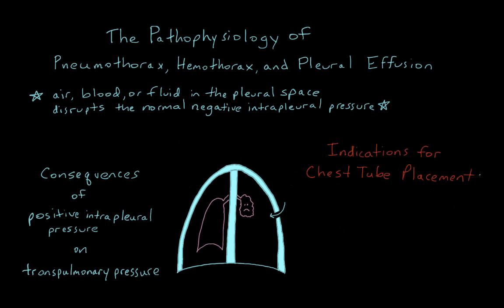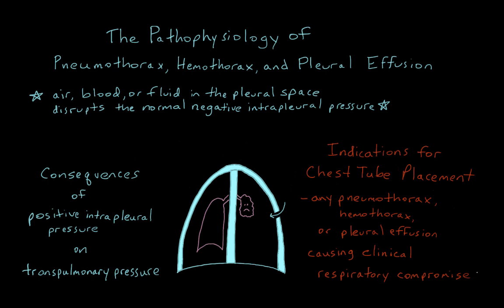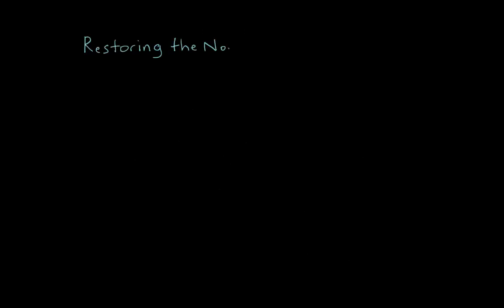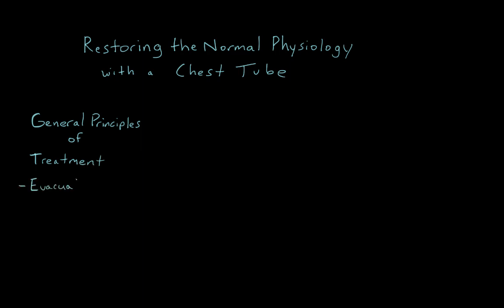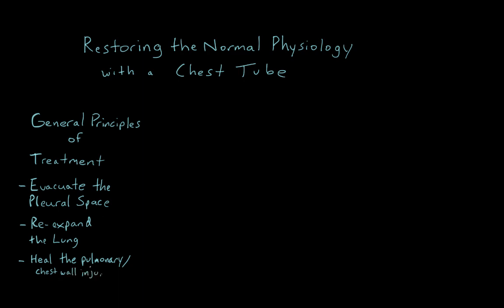Any pneumothorax, hemothorax, or pleural fluid collection causing clinical respiratory compromise is an indication for chest tube placement. This is especially true in the trauma setting where pneumothorax associated with tension physiology or hemothorax causing massive hemorrhage can be immediately life-threatening. Under less dire circumstances, it is possible to observe a small pneumothorax, hemothorax, or pleural effusion visualized with diagnostic imaging but without associated clinical respiratory compromise. The key to treating these conditions is evacuating the pleural space of air, blood, or fluid, restoring the negative intrapleural pressure in order to drive lung re-expansion, and healing the pulmonary parenchymal or chest wall injuries that led to the condition in the first place. A chest tube accomplishes all of these things.